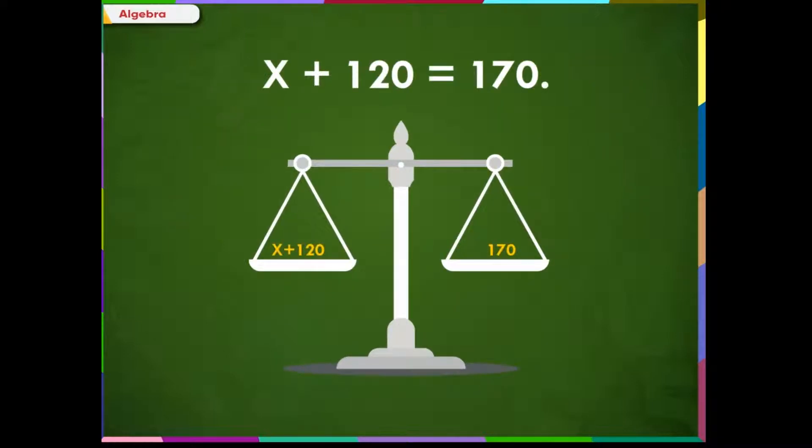Consider the same equation: x plus 120 equals 170. We place the LHS of the equation on the left pan of the balance and the RHS on the right pan of the balance.